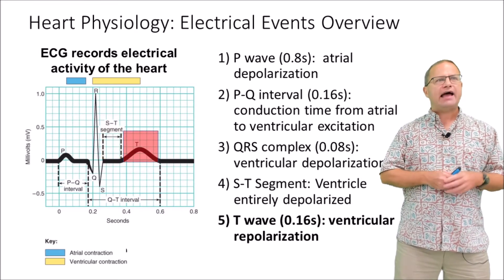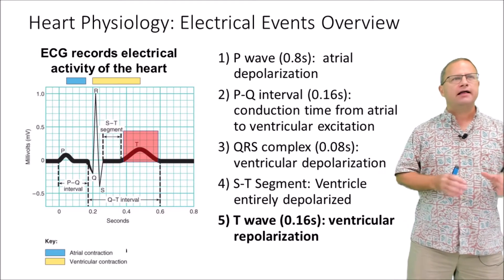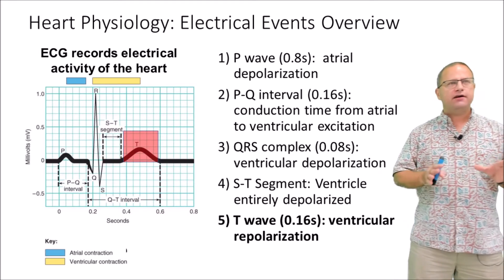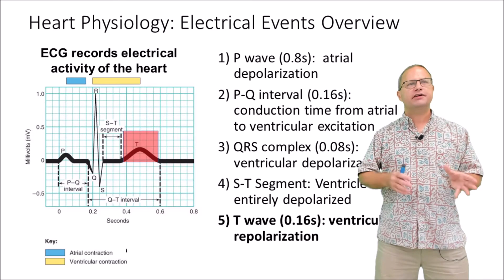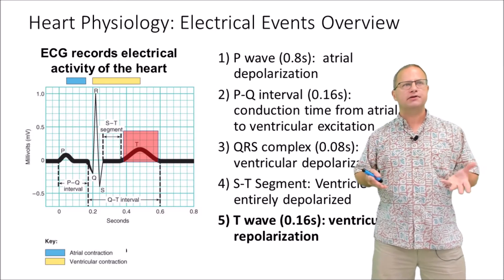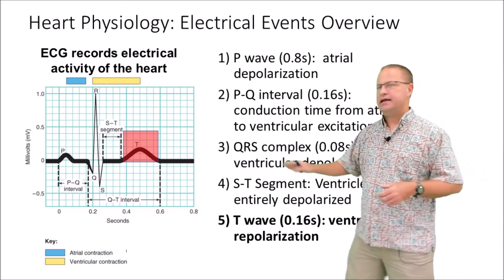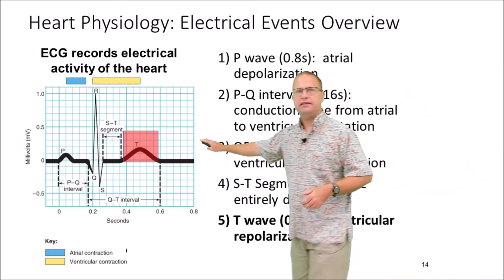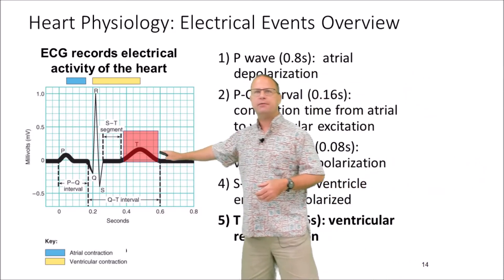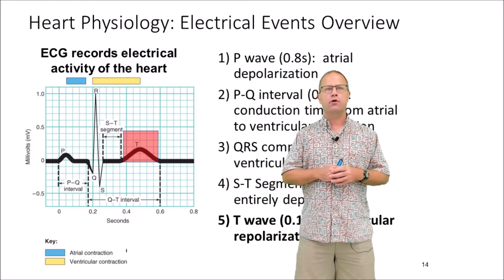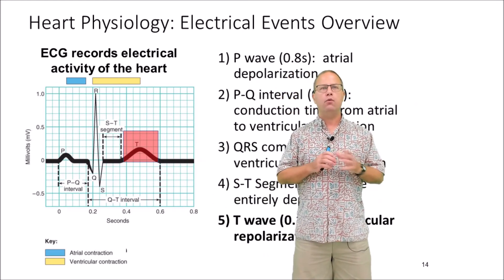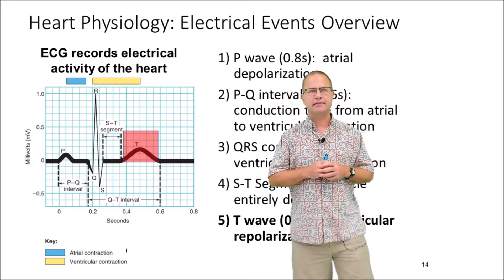Finally we have our T wave. The T wave is the period where we have ventricular repolarization. You can see that this wave is about four boxes in width, so four times 0.04 would be 0.16 seconds.